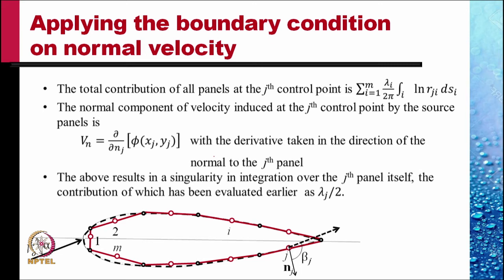The above results in a singularity in integration over the jth panel itself. The contribution of which has been evaluated earlier as lambda j divided by 2. So we eliminate the jth panel from this sum and add lambda j by 2 separately.